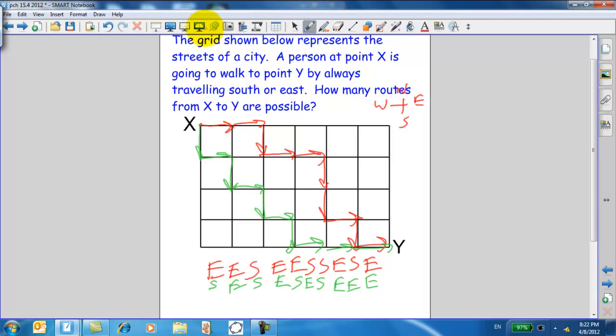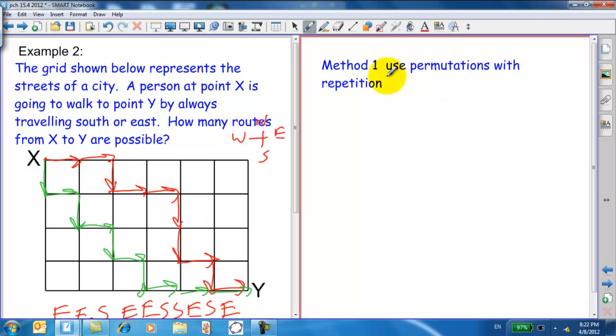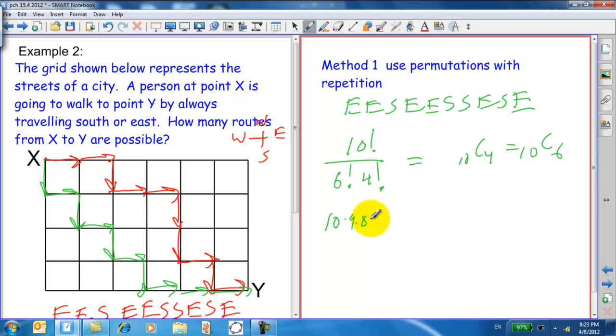So, in terms of coming up with a solution now, method 1 is use permutations with repetition. That is, you've got this one route, east, east, south, east, east, south, south, east, south, east. And think of it just like the Massachusetts problem where we have 10 factorial and we're going to divide out the repeating elements. We have 1, 2, 3, 4, 5, 6 E's, so we divide by 6 factorial, and 1, 2, 3, 4 S's, 4 factorial, which basically is equivalent to 10 C4, which also equals 10 C6. So, you can do that on your calculator or go through this as 10 times 9 times 8 times 7, and the 6 on down cancels with this, and then 4 times 3 times 2 times 1. So, we get 10 times 3 times 7, or 210.